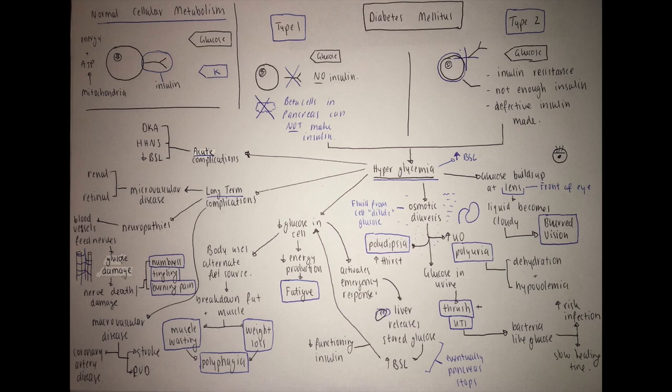As this glucose isn't passing across into the cell, it accumulates in the bloodstream. Another word for that is hyperglycemia. Hyper, high, glyc, glucose, emia in blood. We also say it's a high BSL, high blood sugar level.